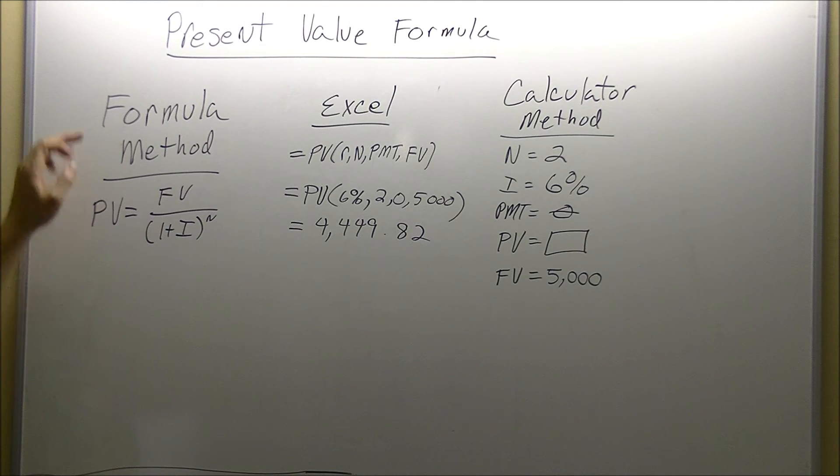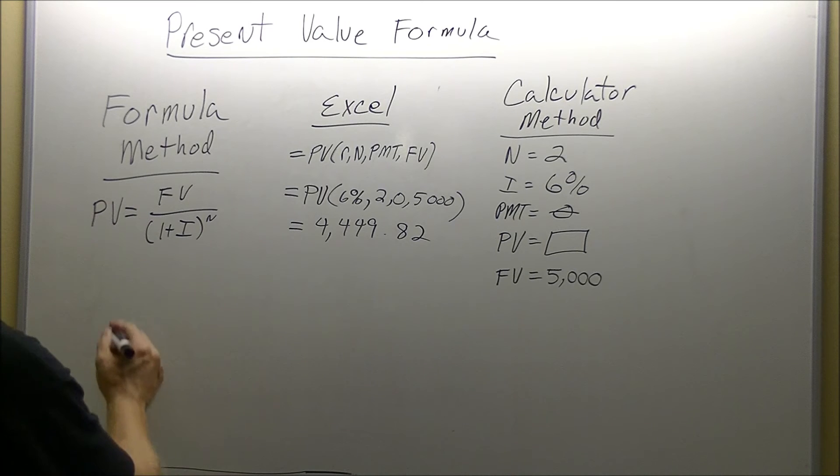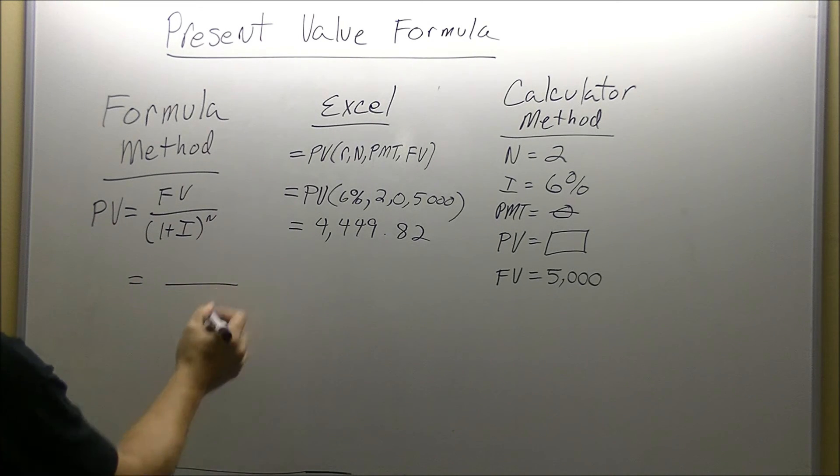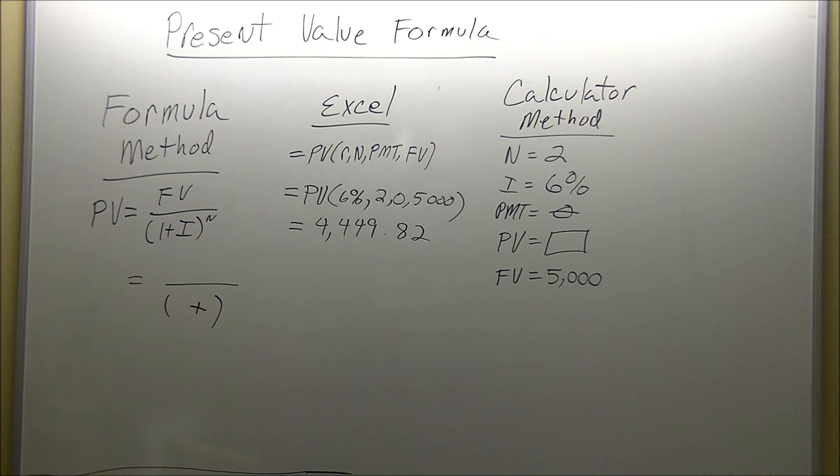When you're doing it with your formula method, the first thing you're always going to do is set up your structure. You're going to hit your equal sign, division sign, open up your parenthesis, put your addition sign in there. So now what we have is a structure, all we have to do now is just fill in the blanks.